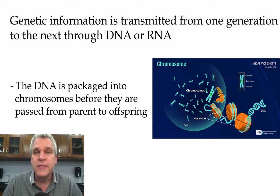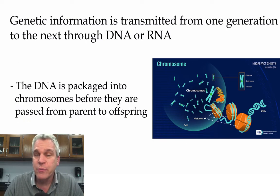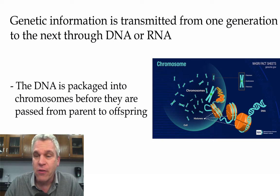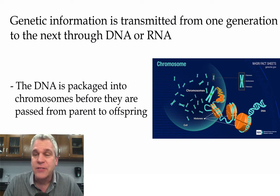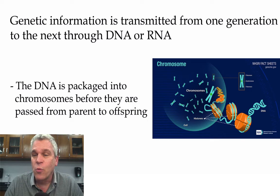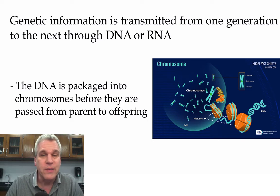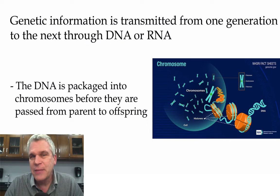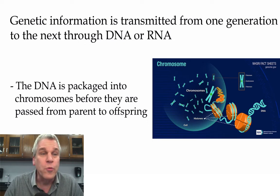Before the DNA can be passed on from parent to offspring, though, it has to be packaged up into chromosomes, which we can see here on the right. This is where the DNA is going to be wound around these special type of proteins called histone proteins. They're tightly packed together to form chromosomes.